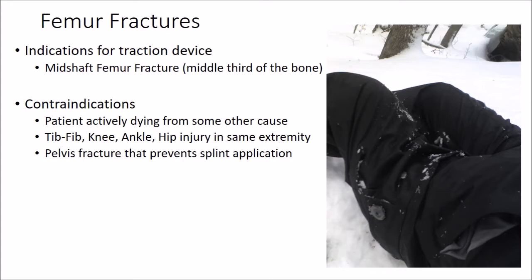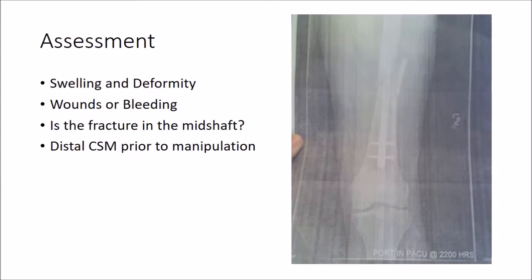A concomitant injury to another area of the same leg or of the pelvis will usually preclude use of the traction device, depending on the particular model being used. If you suspect a femur fracture, expose the area looking for swelling, deformity, and any associated wounds or bleeding. Once this is done, cover the patient back up to prevent heat loss, and satisfy yourself that the fracture is in the mid-shaft area, at least a hand's width away from the knee or hip.